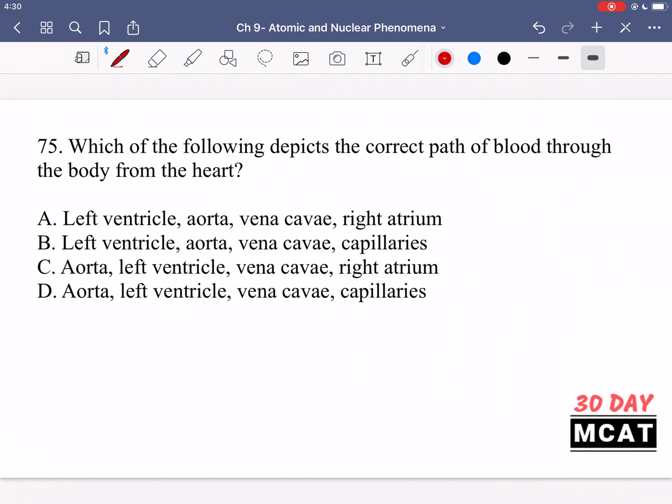In question 75, we're asked, which of the following depicts the correct path of blood through the body from the heart? So correct path of blood, and we're talking about the body. So systemic circulatory system, not the pulmonary one.